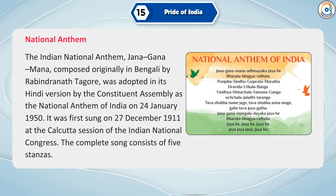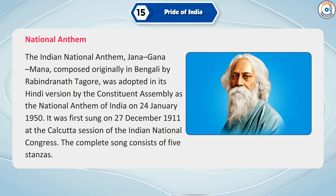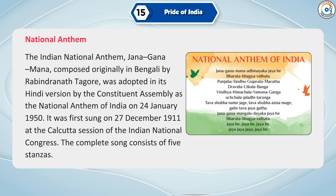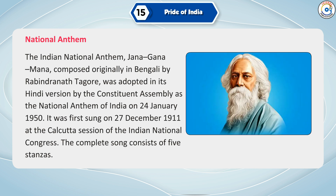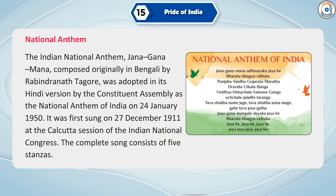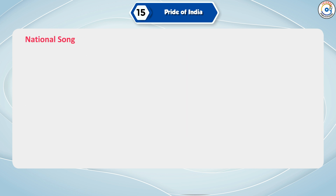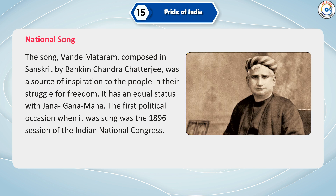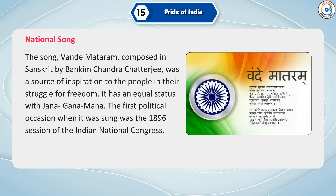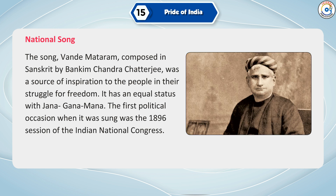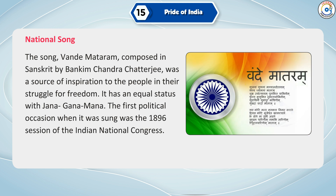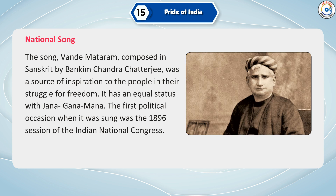The Indian National Anthem, Janaganamana, composed originally in Bengali by Rabindranath Tagore, was adopted in its Hindi version by the Constituent Assembly as the National Anthem of India on 24 January 1950. It was first sung on 27 December 1911 at the Calcutta Session of the Indian National Congress. The complete song consists of five stanzas. The National Song, Vande Mataram, composed in Sanskrit by Bankim Chandra Chatterjee, was a source of inspiration to the people in their struggle for freedom. It has an equal status with Janaganamana. The first political occasion when it was sung was the 1896 session of the Indian National Congress.